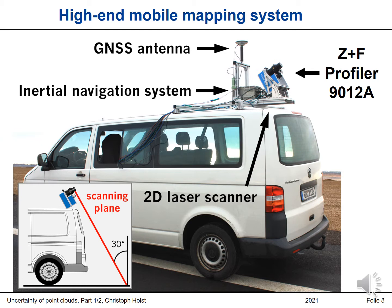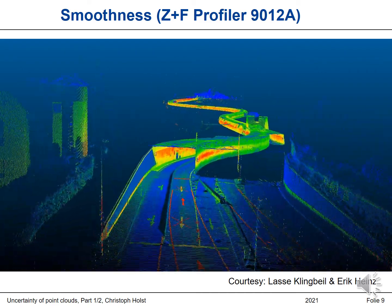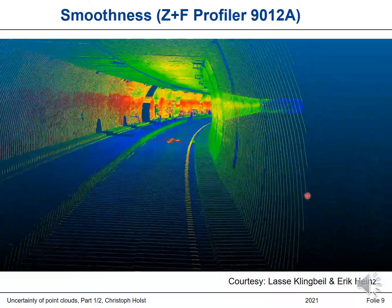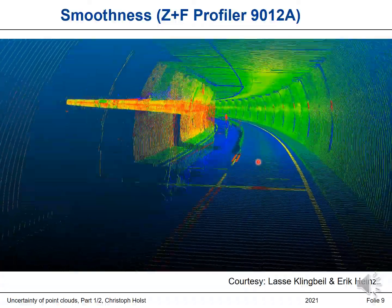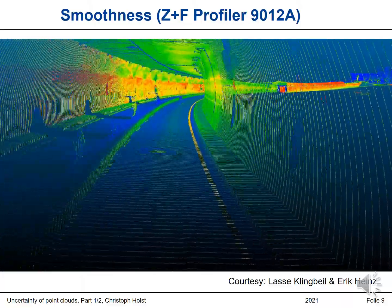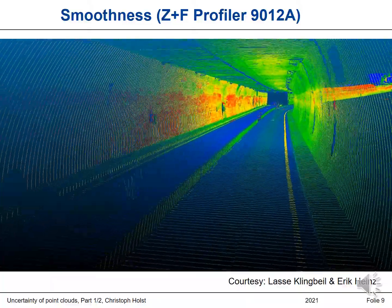Let's go to another acquiring system: mobile mapping systems. Here is a mobile mapping system already introduced by Lasse Klingbeil. We have a bus, a GNSS antenna, an inertial navigation system, and here is the Zoller+Fröhlich Profiler 9012A, which acquires the surrounding ground by this scanning plane with an incidence angle of 30 degrees. We drive with the bus through Bonn and through a tunnel. The resulting point cloud shows many details — the walls, the paintings on the street, everything looks quite smooth. This point cloud also gives the impression that we don't have to care about uncertainty at all, because the product is just perfect.